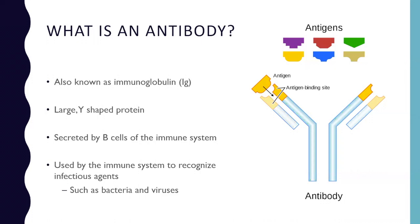The first thing I want to talk about is what is an antibody. An antibody is actually part of our immune system — it's how we help stay healthy and fight infections. It's a protein. The other name of an antibody is immunoglobulin. There are many different types of antibodies in our body, but in general they're shaped like a Y, and they're secreted by cells of the immune system known as B cells.